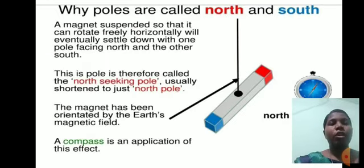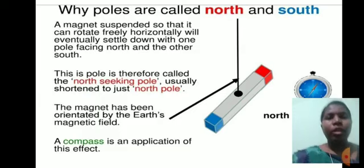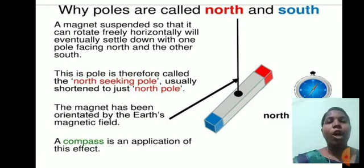Why are poles called north and south? A magnet suspended so that it can rotate freely horizontally will eventually settle down with one pole facing north and the other south. This pole is therefore called the north-seeking pole, usually shortened to just north pole. The magnet has been orientated by the Earth's magnetic field. A compass is an application of this effect.